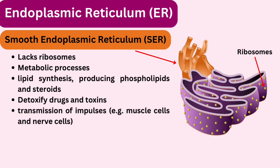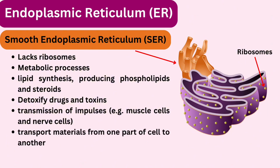In some cells, the smooth ER is also responsible for transmission of impulses — for example, in muscle cells and nerve cells. It also plays an important role in transport of materials from one part of the cell to another. Furthermore, the ER provides mechanical support to cells so that their shape is maintained.